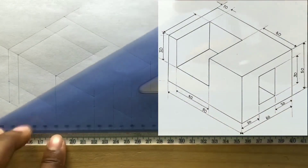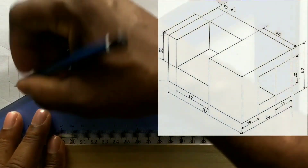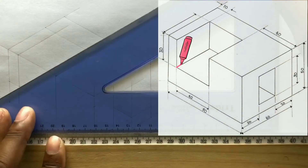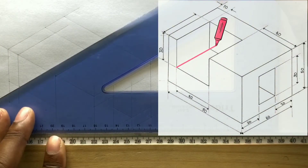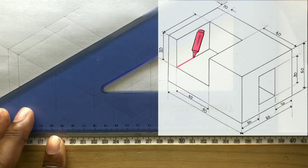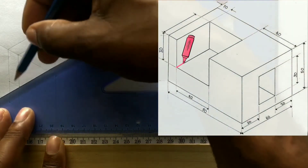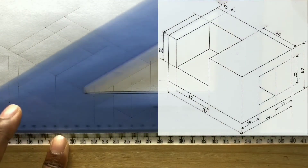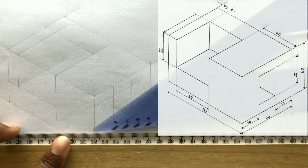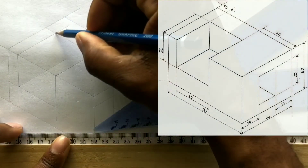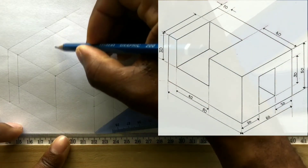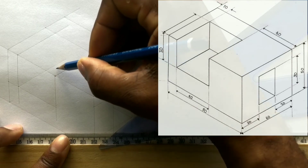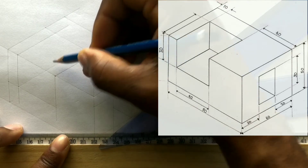Now from this intersection, you will draw a horizontal line. Also draw a vertical line from this intersection to intersect with this line. Now use your t-square along with your set square.